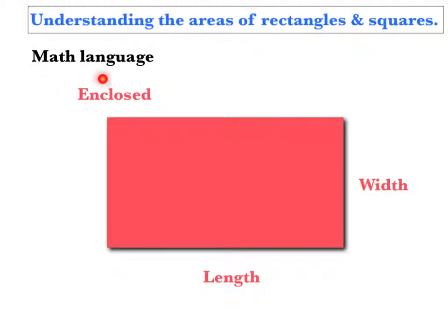So first we'll look at the math language. The first is enclosed, this means all this space here inside of the rectangle, which means that the shape is enclosed. In the context of the question we'll be showing you later, enclosed area means all of this space. Width is this side over here and this is the length.